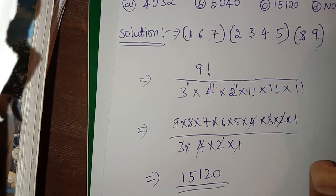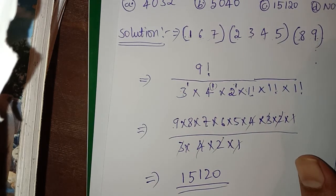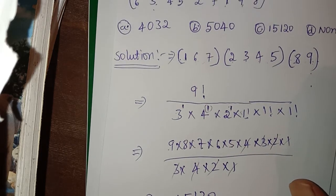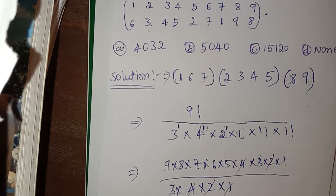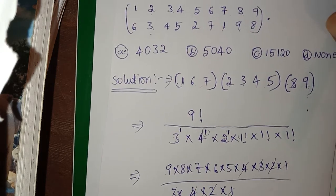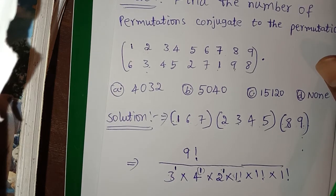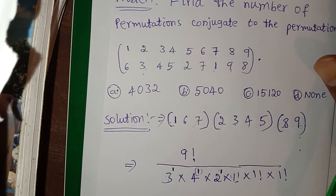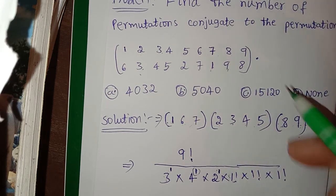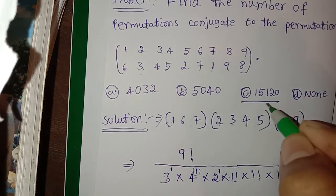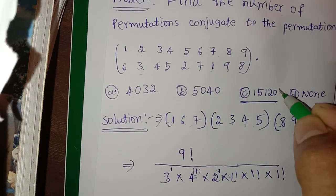Now we get 9 × 8 × 7 × 6 × 5. Multiplying this gives 15,120. So the number of permutations which are conjugate to the given permutation is 15,120, and choice C is correct.